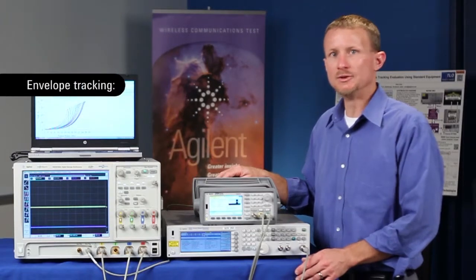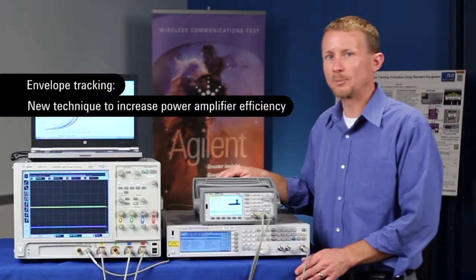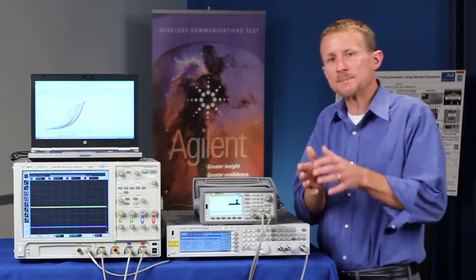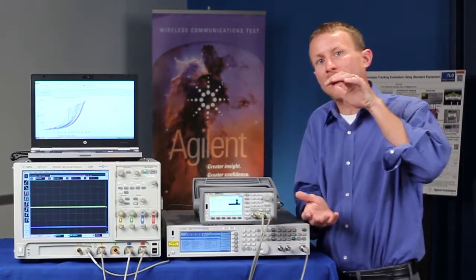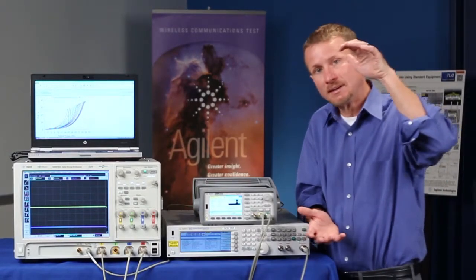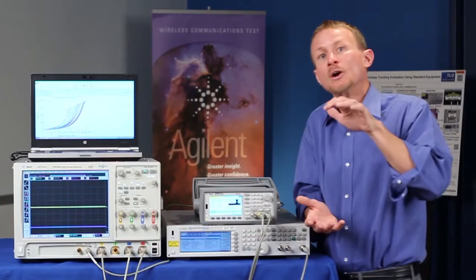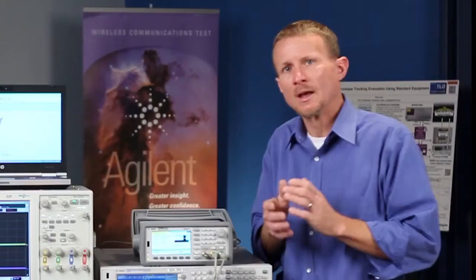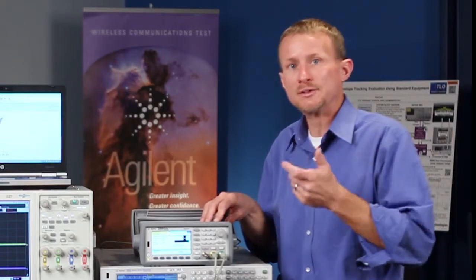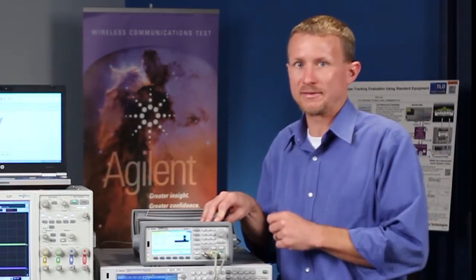Envelope tracking is a new technique used to increase the power amplifier efficiency, among other things. How does it work? It works basically by increasing the power supply voltage of the power amplifier when the input signal level is larger, and conversely decreasing the power supply voltage when the input signal level is lower.